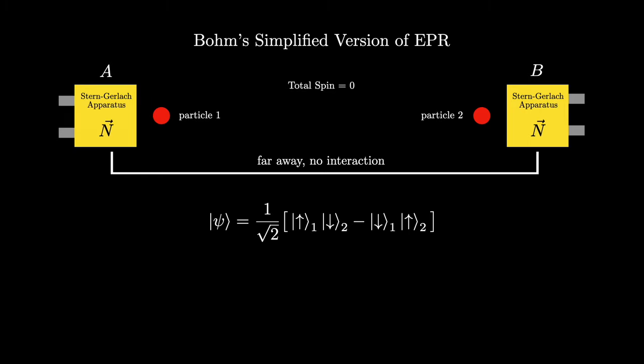Let's say particle one passes through apparatus A and comes out up. Since the total spin of this system is zero, what quantum mechanics predicts is that the other particle must necessarily, that is, with probability equal to one, come out down. And if particle one were to come out down, then particle two must come out up.